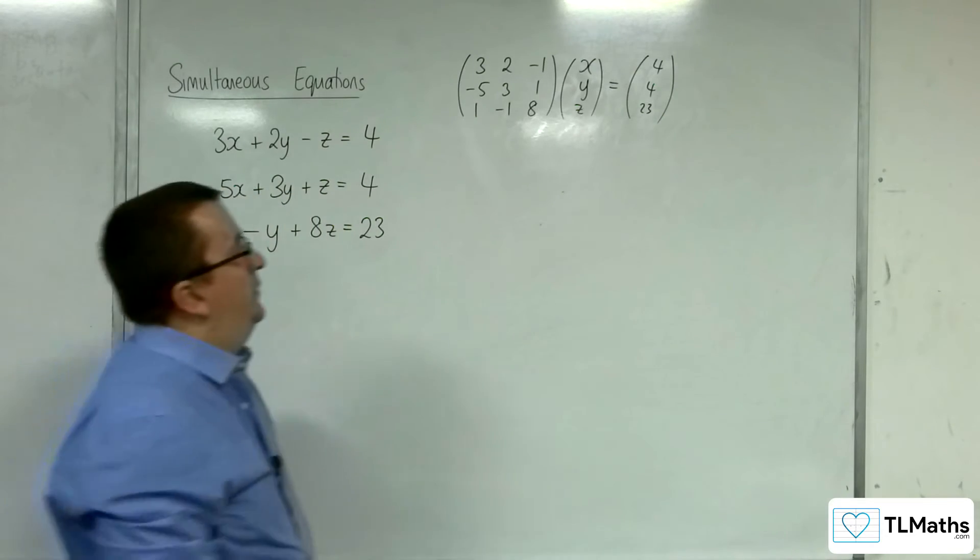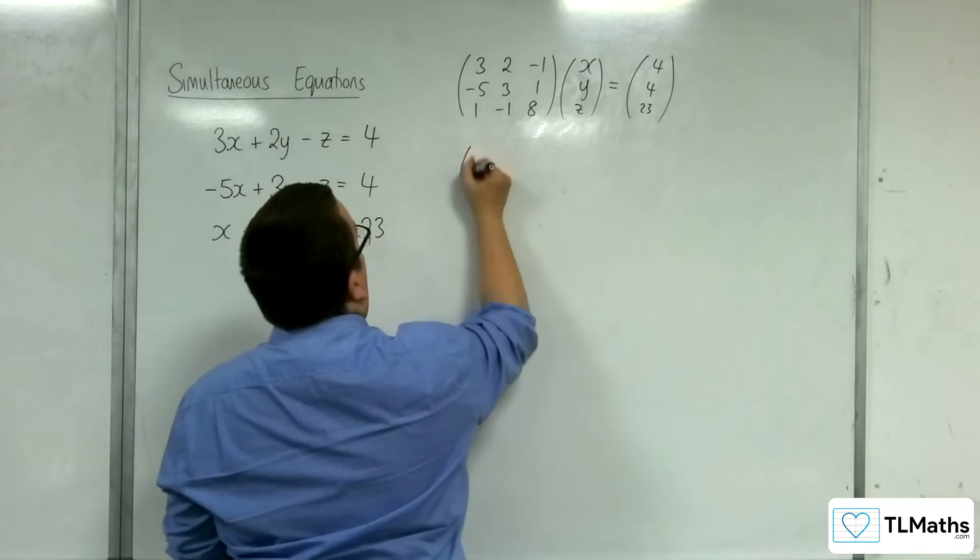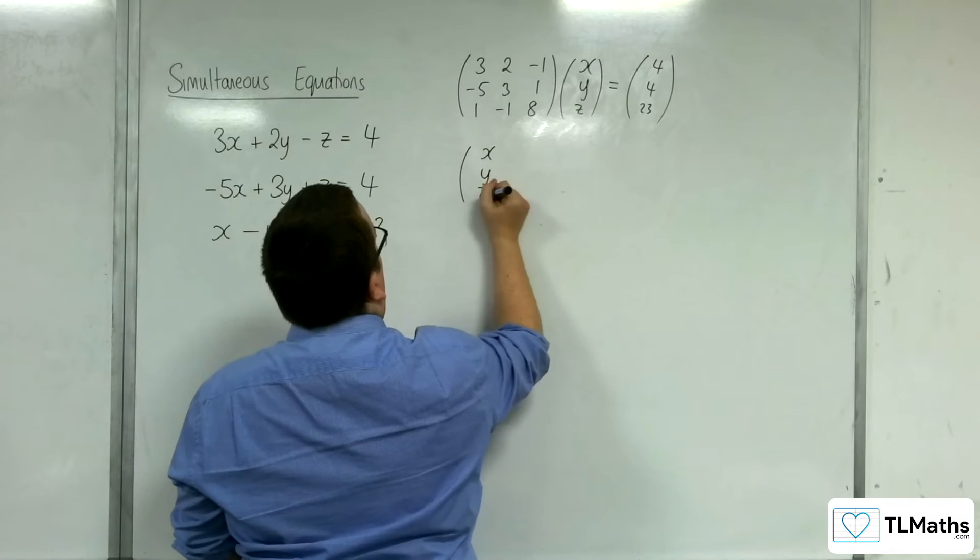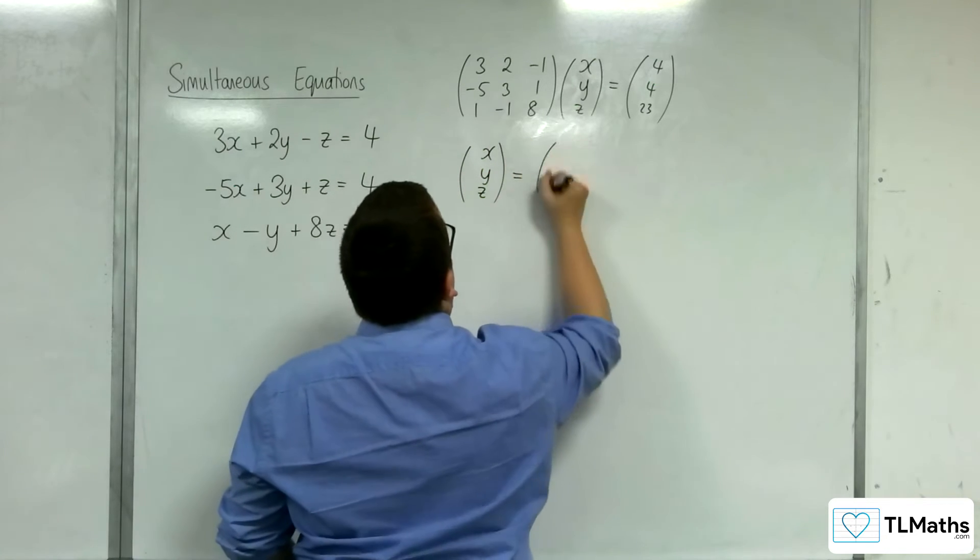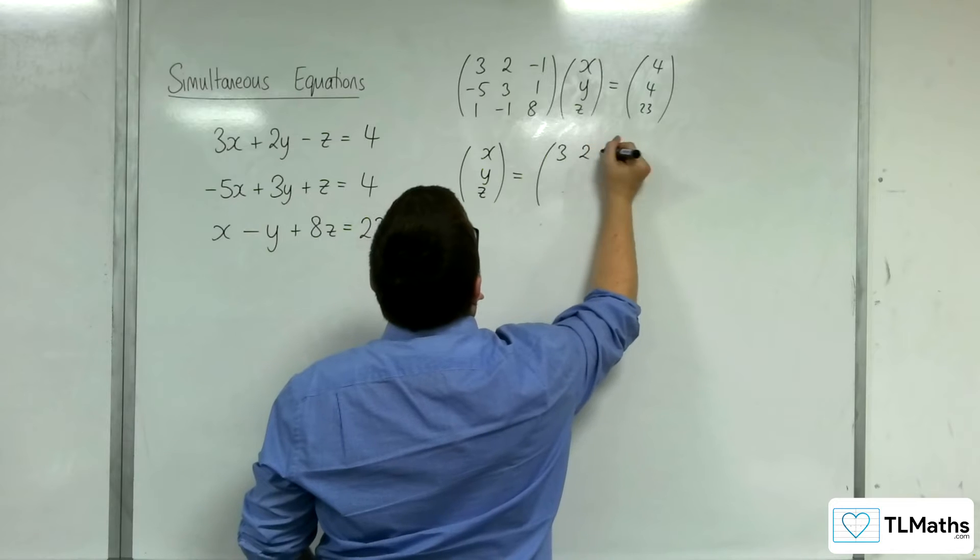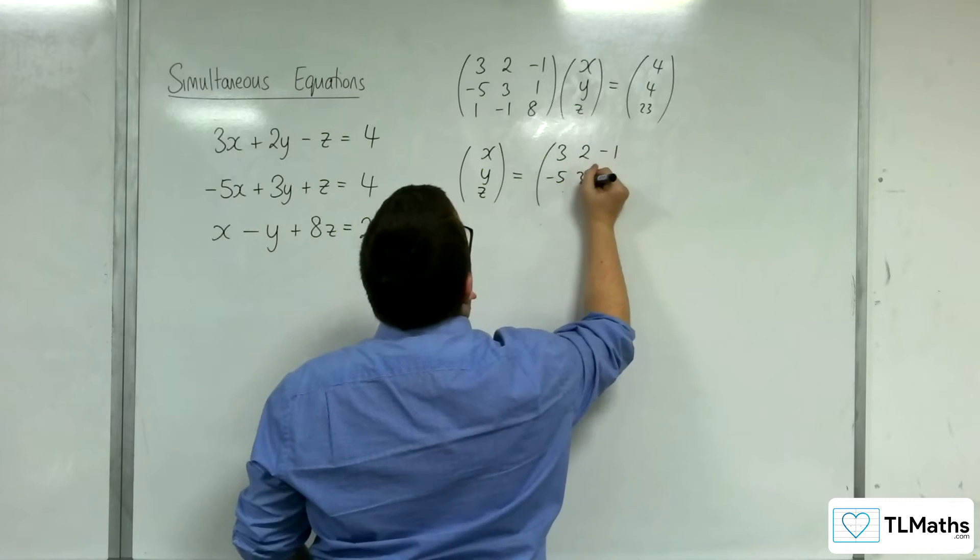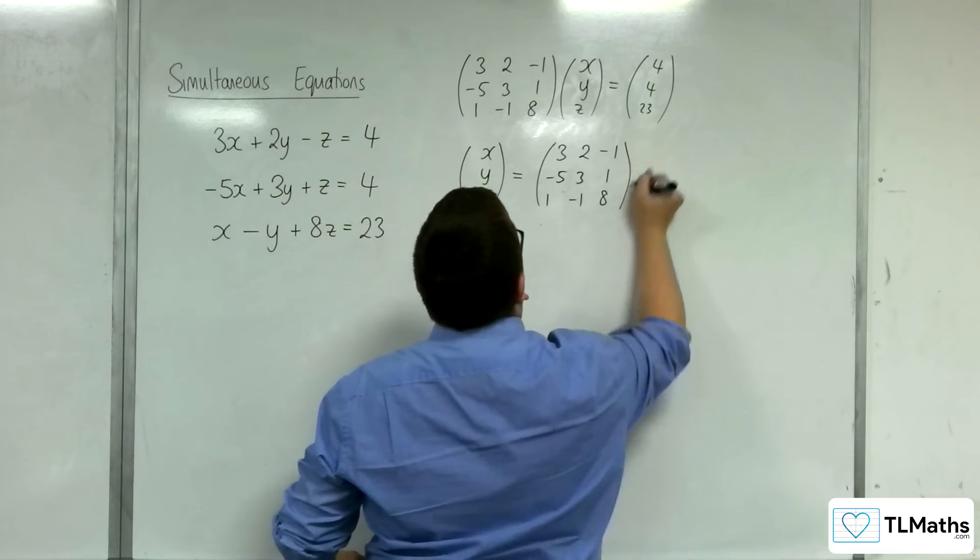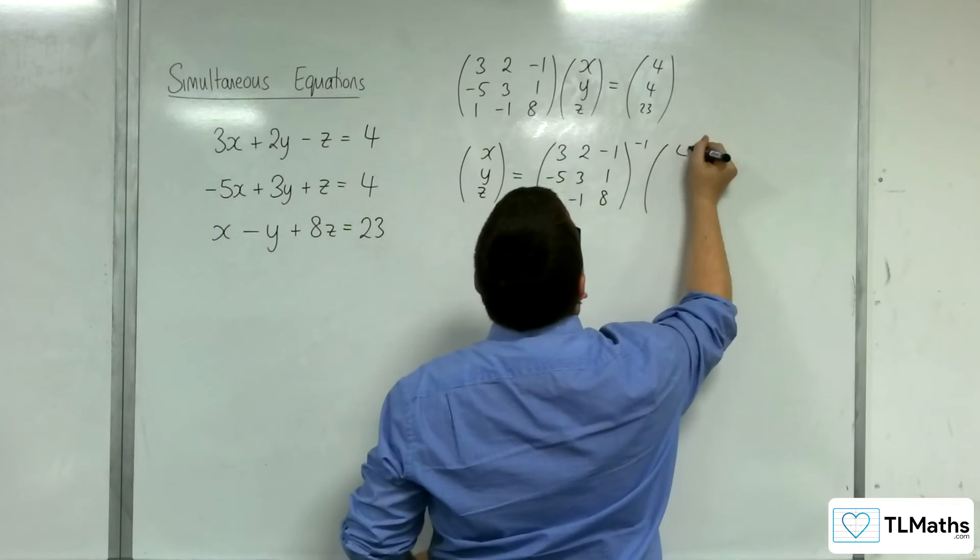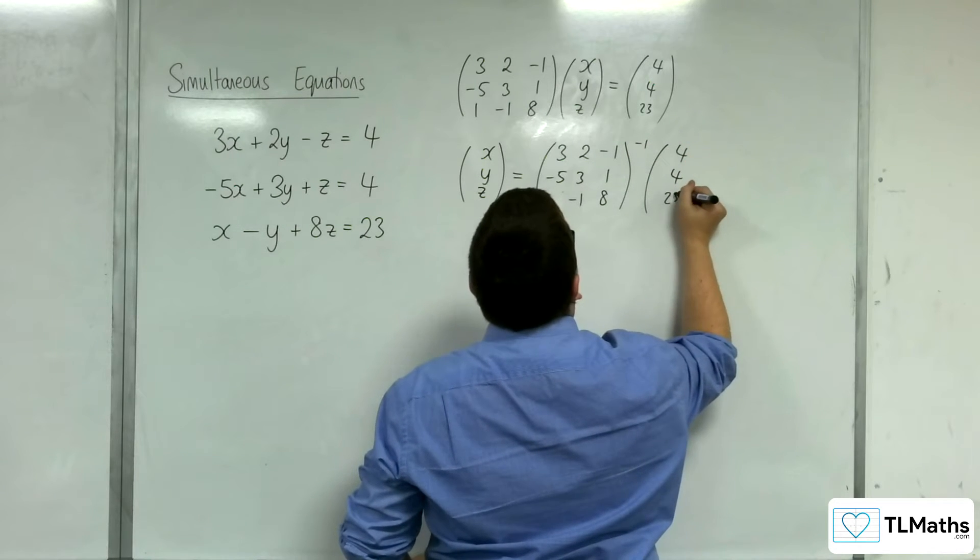OK. So, x, y, z will be equal to the inverse matrix of 3, 2, minus 1, minus 5, 3, 1, 1, minus 1, 8, multiplied by 4, 4, 23.